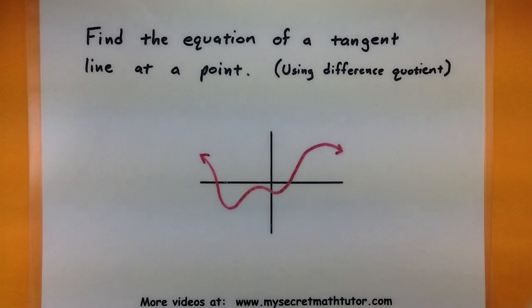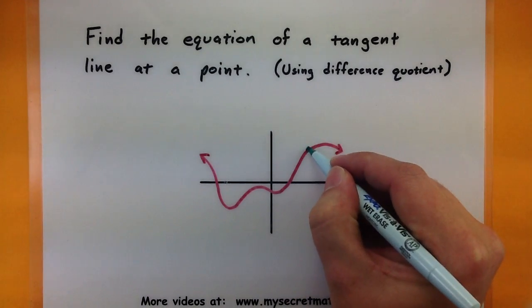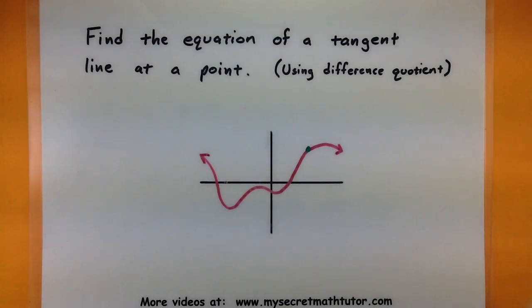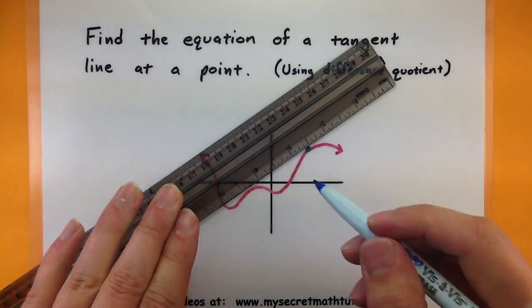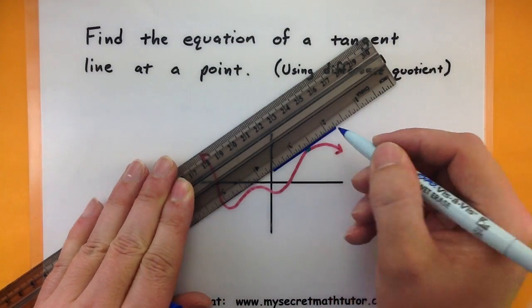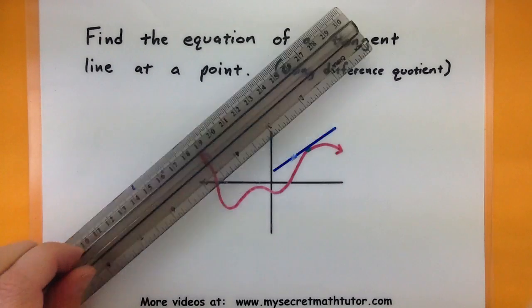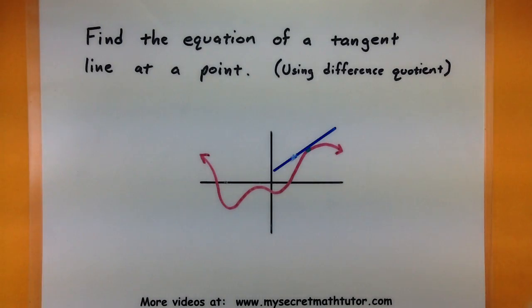So the idea behind finding a tangent line at a given point is that maybe we have some sort of function like this down here, and somewhere along that line there is a point. So what we're interested in doing is finding the equation of the tangent line that goes through that given point. Now when you're doing something like this graphically it's not too bad to just get a good sketch of this. We want to get the entire equation so we're going to go through an algebraic process.